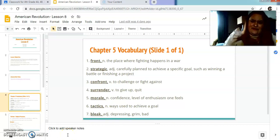Morale is the confidence or level of enthusiasm one feels. So if there's a lot of high morale, everybody's really excited to do something. They're feeling good. Tactics are ways used to achieve a goal. And bleak means depressing, grim, or bad.